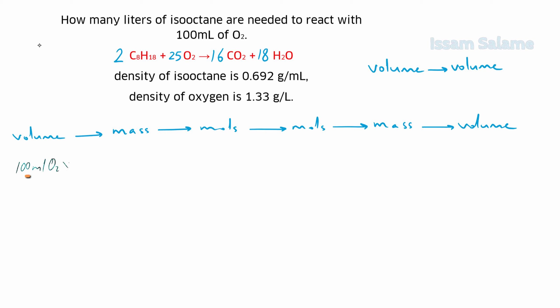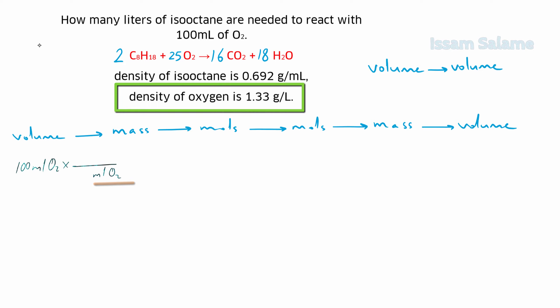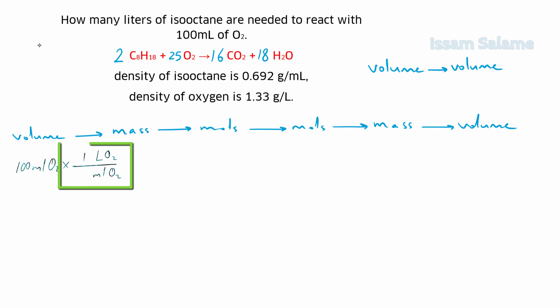Listen carefully: the density of oxygen is 1.33 grams per liter, which is a relation between grams and liters. We cannot directly convert milliliters to grams of oxygen because we have no relation between milliliters and grams of oxygen. So we must first convert milliliters of oxygen to liters of oxygen, then convert liters of oxygen to grams using the density.